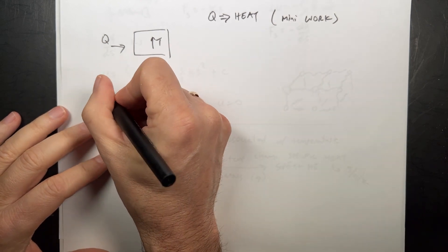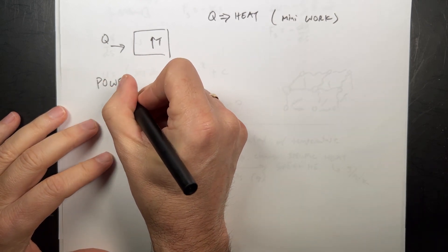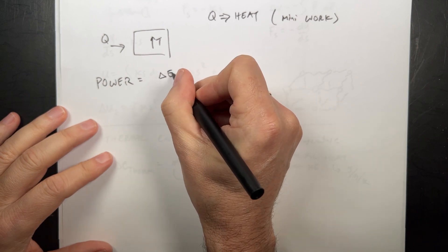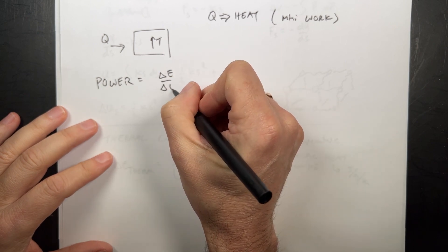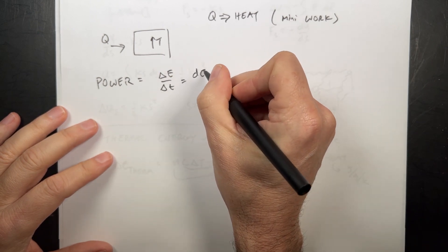Two more things. Power. Power we define as the rate of change of energy, delta E over delta T, or as a derivative, dE/dt.